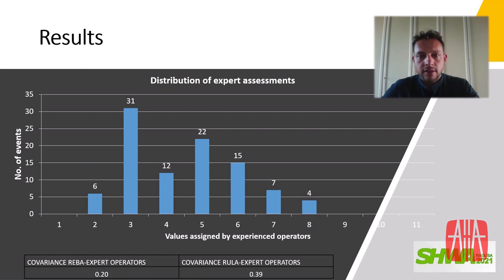To have a subjective comparison, a third sample was introduced: all images were assessed by six experienced operators who assigned a value from 1 to 11 according to their personal opinion of posture ergonomics. The indices were normalized and compared graphically, and covariance between REBA, RULA, and expert operator values was calculated. The analysis showed more similar values between the RULA index and expert operators, although the risk level was more similar to the REBA index.